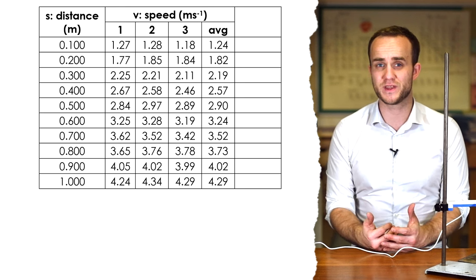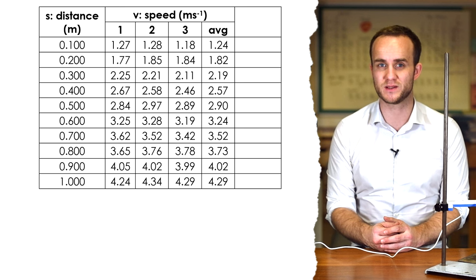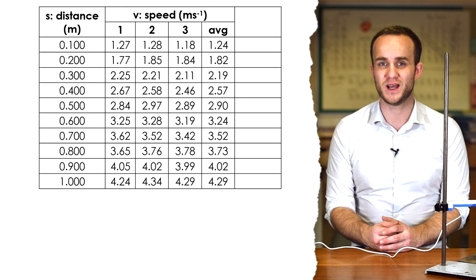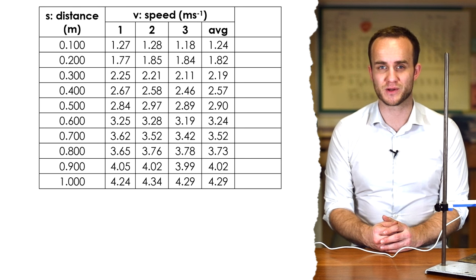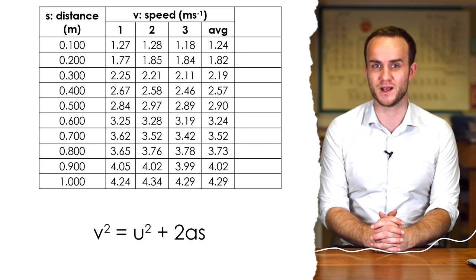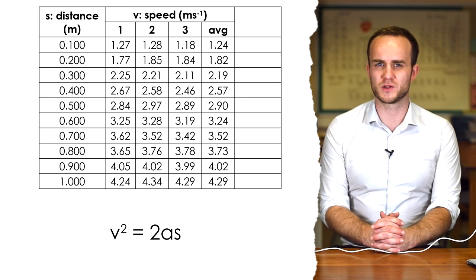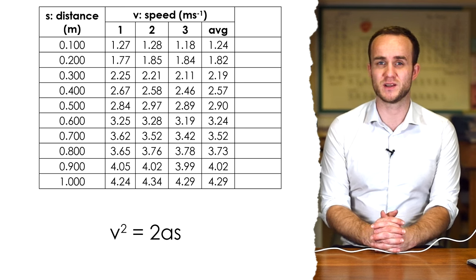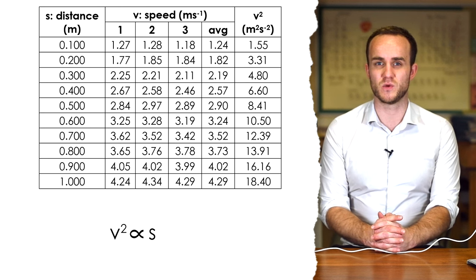So here are all of my readings. Now if we think about SUVAT we're dealing with S, U is always going to be zero because we're just dropping it and as an aside it's important that you do drop it. You don't push it downwards or push it upwards as you let go. V well our data logger is recording that and A that's our acceleration. We want to find that. So the equation that we want is V² = U² + 2AS. U is always zero so that just turns into V² = 2AS. So that goes to show that we can't draw a graph of V against S because they're not proportional. It's V² that's proportional to S. So we must square all of our average speeds to find V² and here they are.